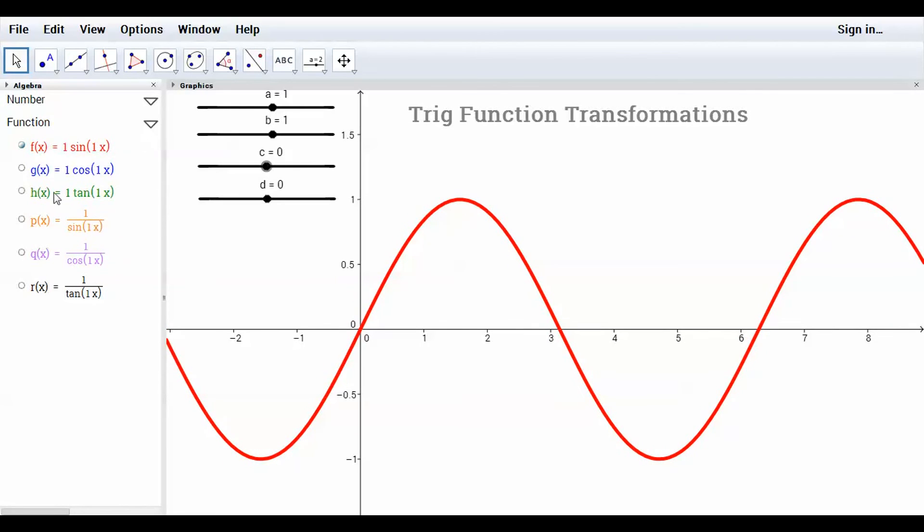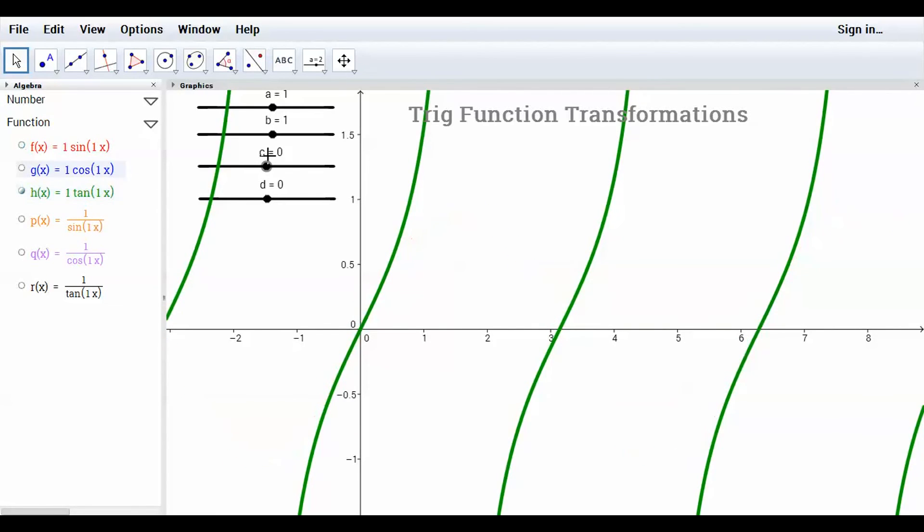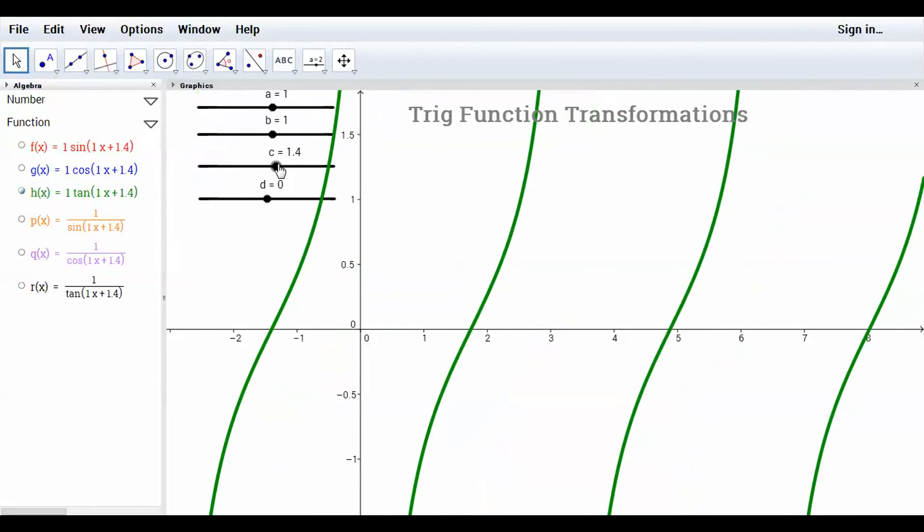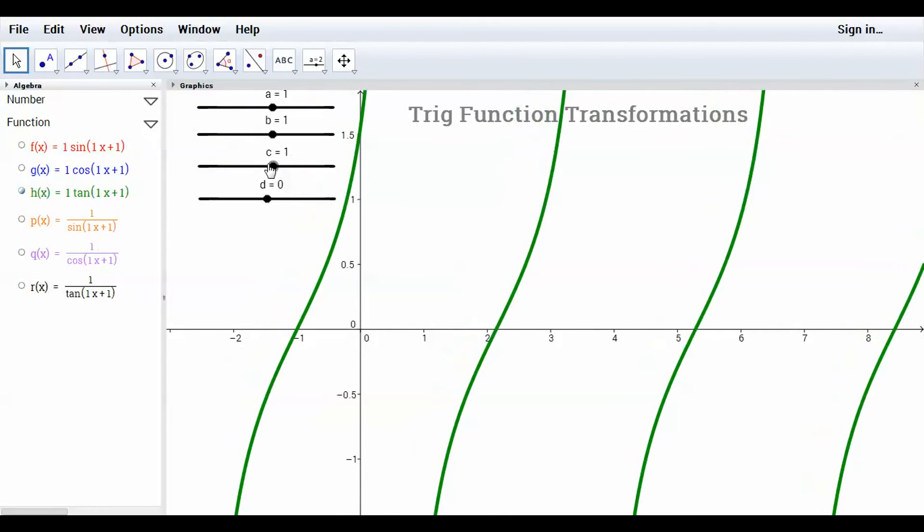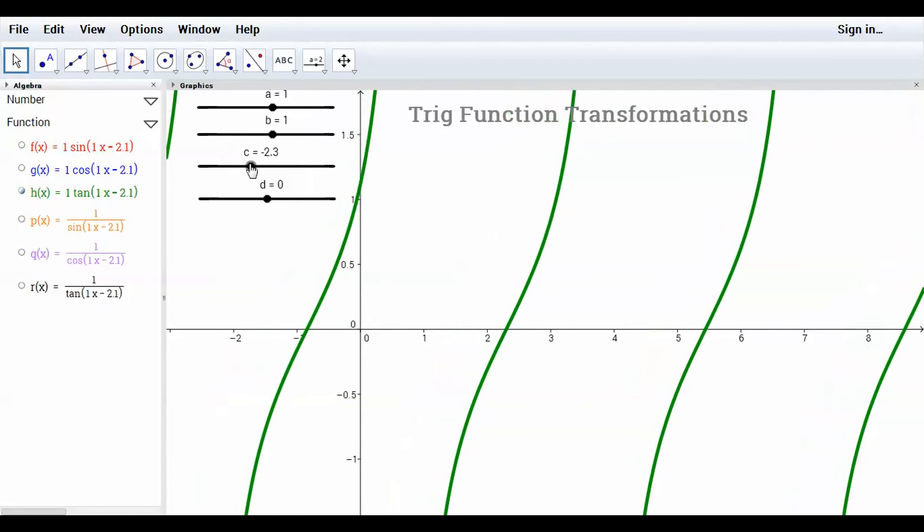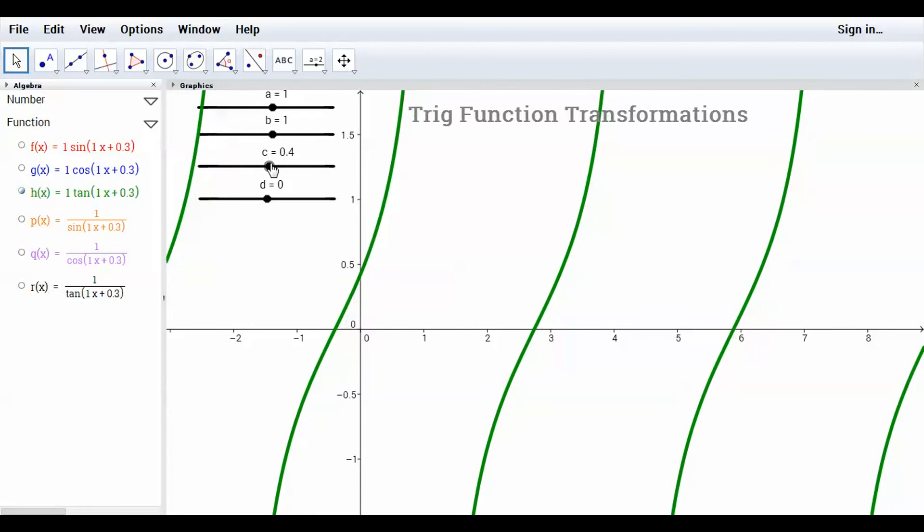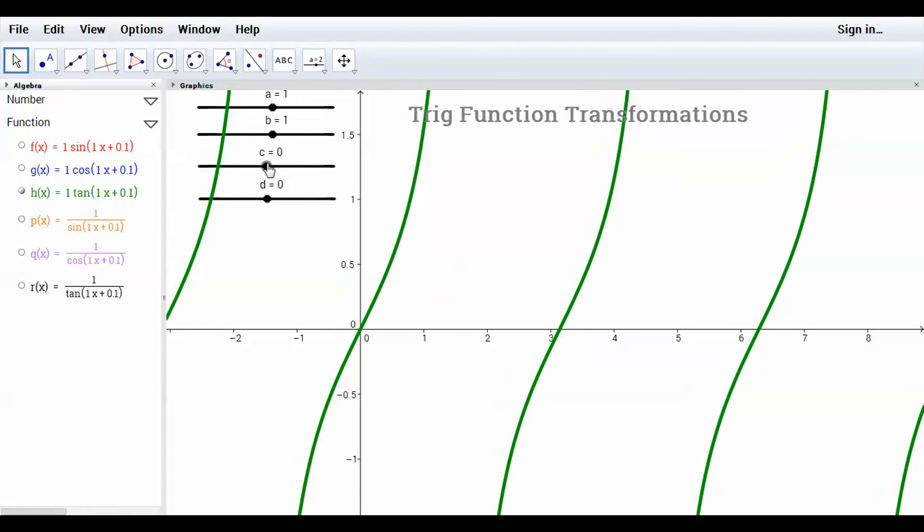Same thing for sine and cosine. Let me go down to tangent rather. Let's go to tangent. If I change the C value, the whole thing is going to - each graph is going to stay equidistant. It's just going to move. It's going to shift left and right. It's called a translation, a phase shift in this case.